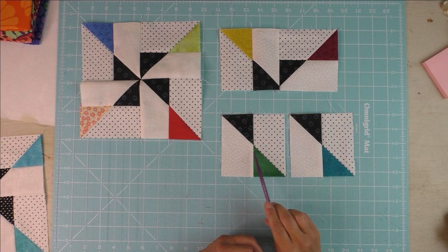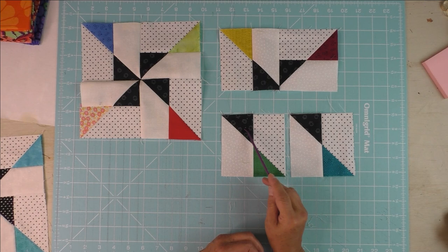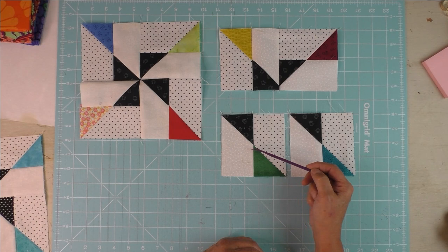We're going to sew these together right like this. Here are two of the units we just put together, and when you press you're going to press toward this dark triangle here that makes the dark pinwheel.